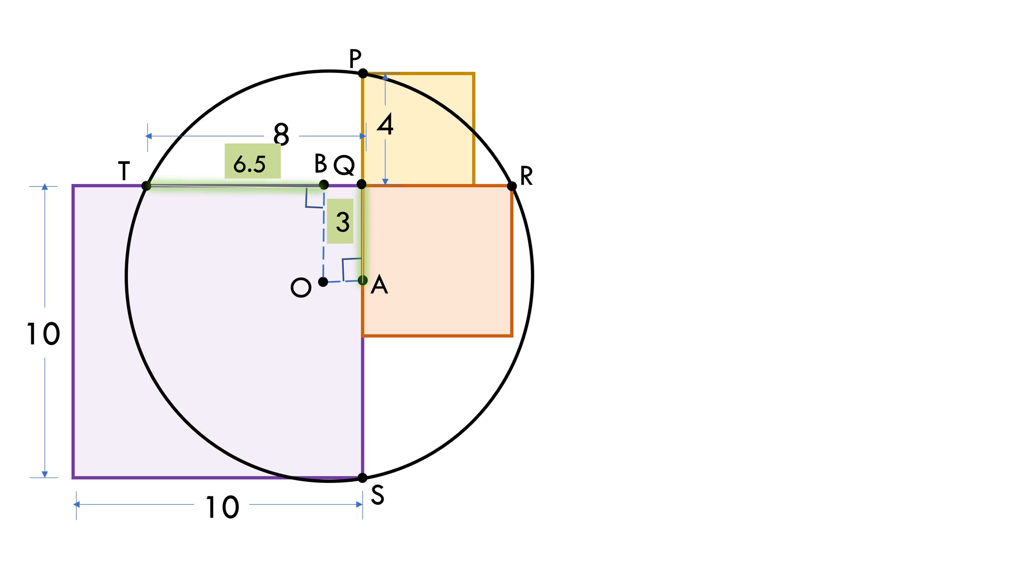Now if we join points O and T, we can see a right angle triangle BOT has been formed. Using Pythagoras theorem in this triangle, we get r squared equals 6.5 whole squared plus 3 squared equals 51.25.